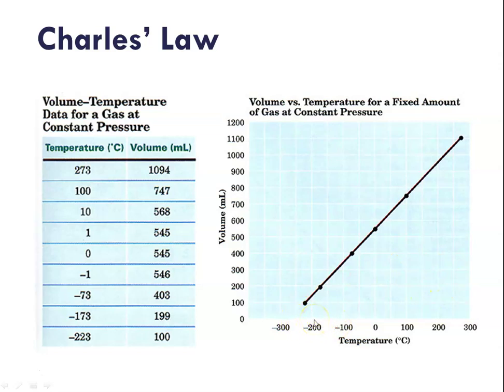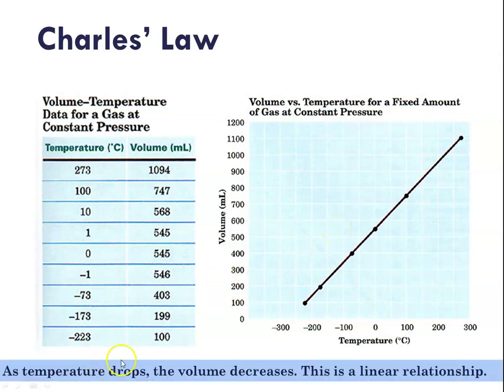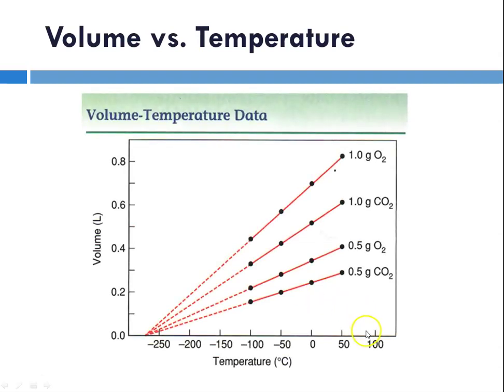And this is how we determined what absolute zero is, by repeating these experiments with every gas that we could get our hands on and determining that the temperature at which the volume of a gas goes to zero always corresponds to that same temperature of negative 273.15 degrees C, which is our absolute zero. So again as temperature drops the volume decreases and it is as you can see here a linear relationship. So this was repeated many times with many different gases and again as it shows here the point where the volume goes to zero is always the same.